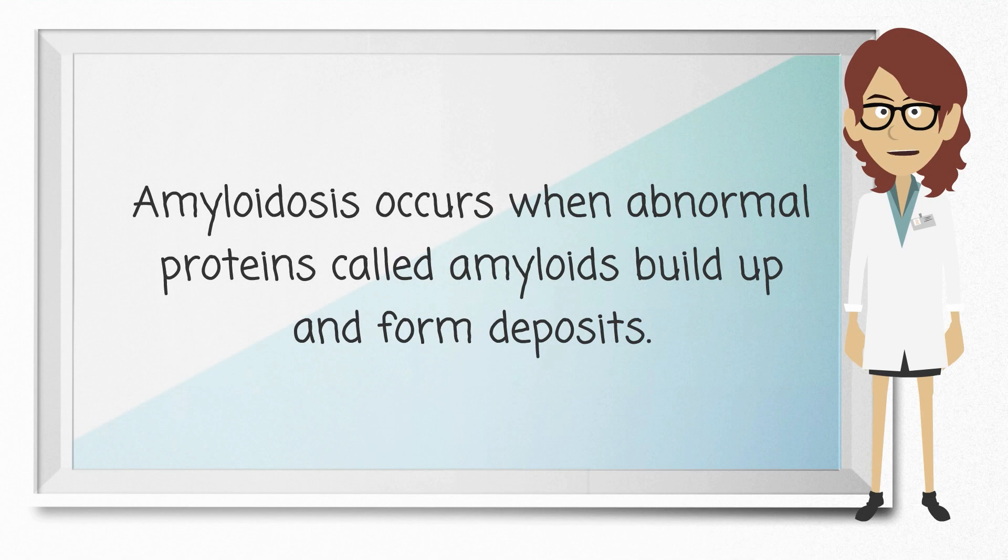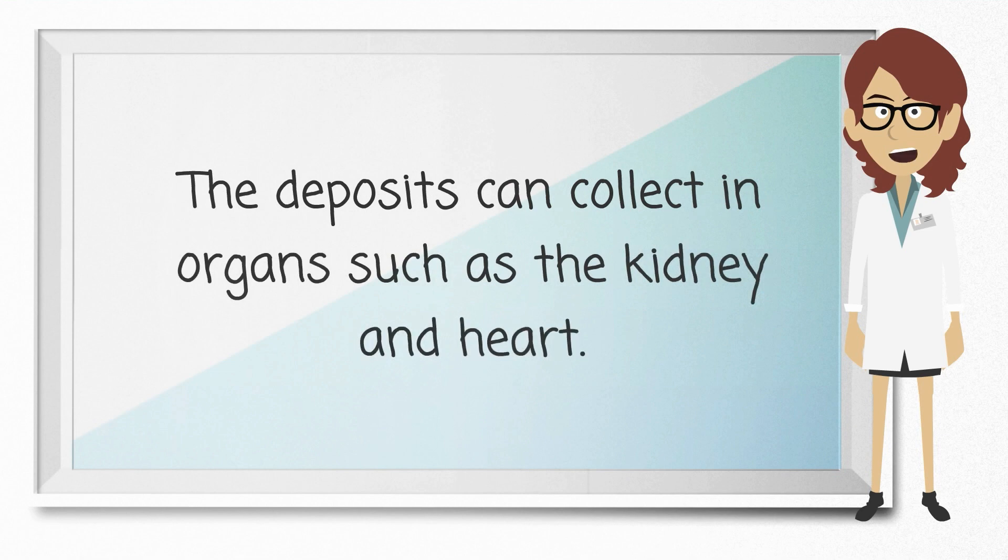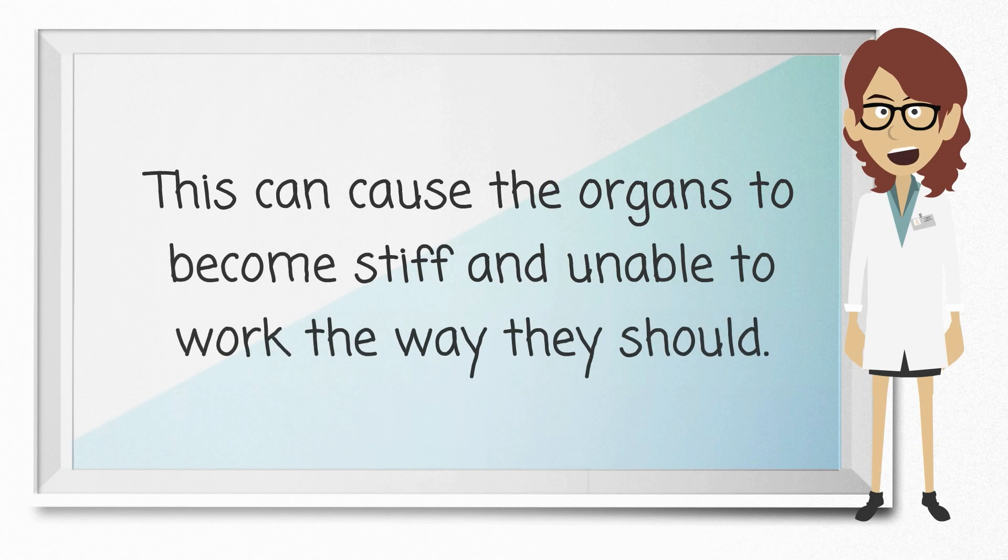Amyloidosis occurs when abnormal proteins called amyloids build up and form deposits. The deposits can collect in organs such as the kidney and heart. This can cause the organs to become stiff and unable to work the way they should.